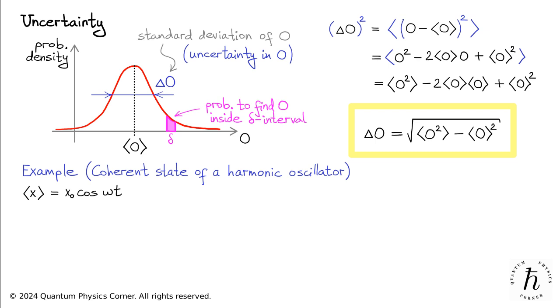As we've seen previously, the expectation value of position equals x sub zero cosine omega t. Earlier, we found the following expression for the expectation value of the particle's potential energy. Since the potential energy operator is simply a constant, M omega squared over 2, multiplied by x squared, we can interpret this expectation value as the constant times the expectation value of x squared. From here, we find the expectation value of x squared.